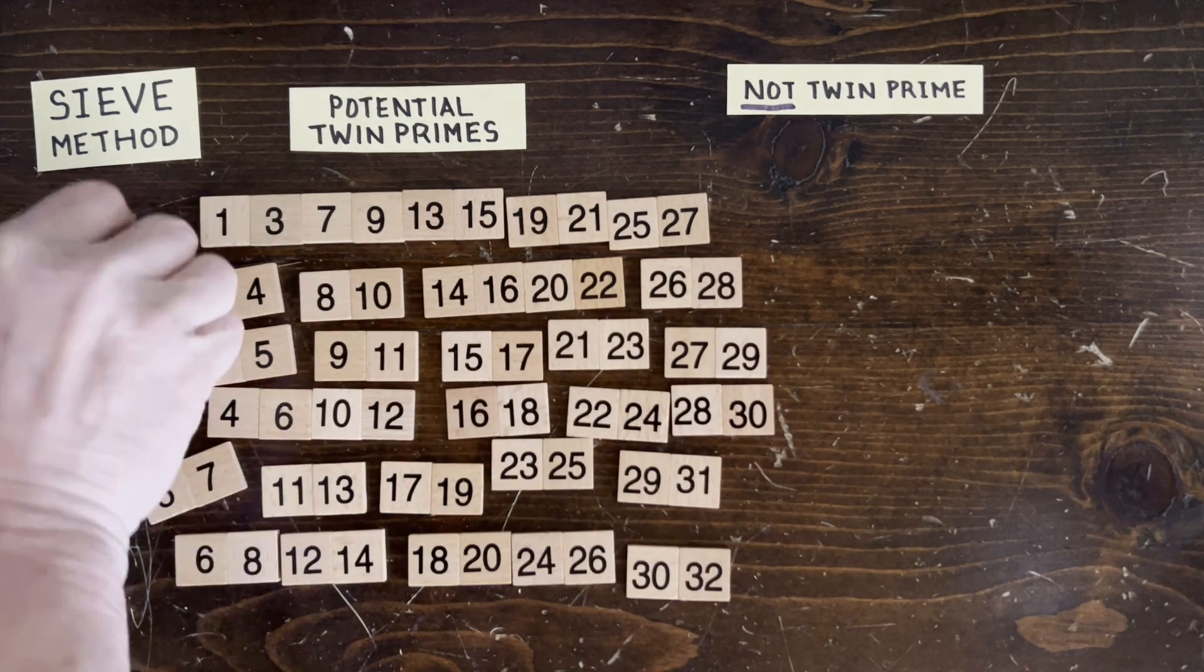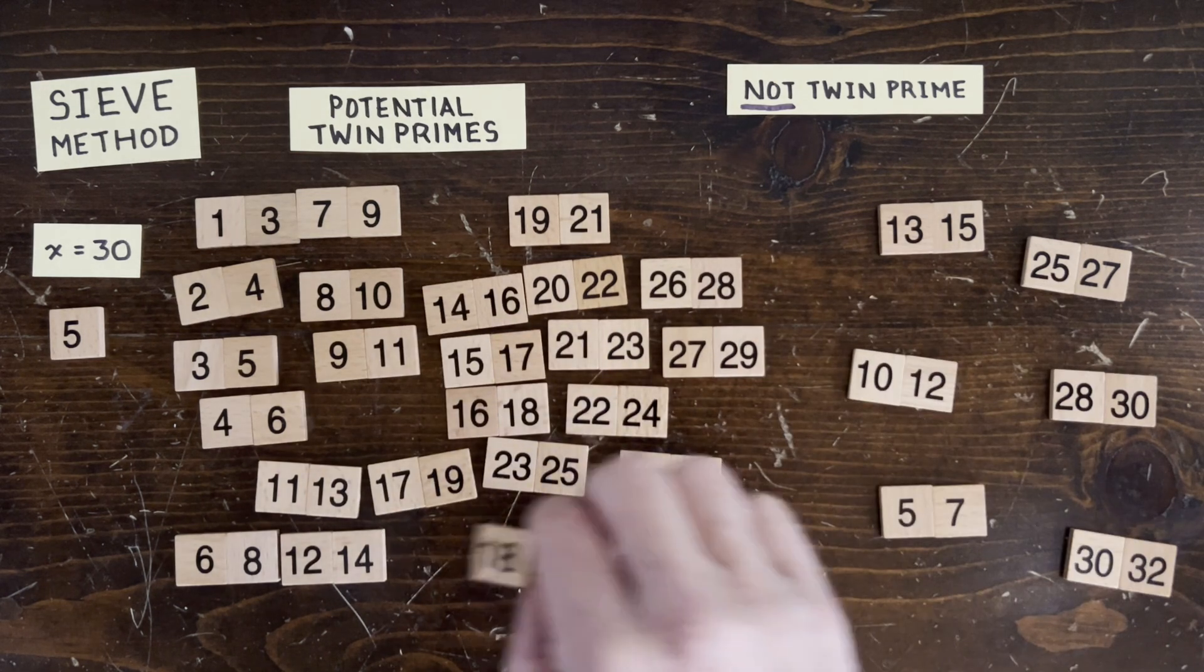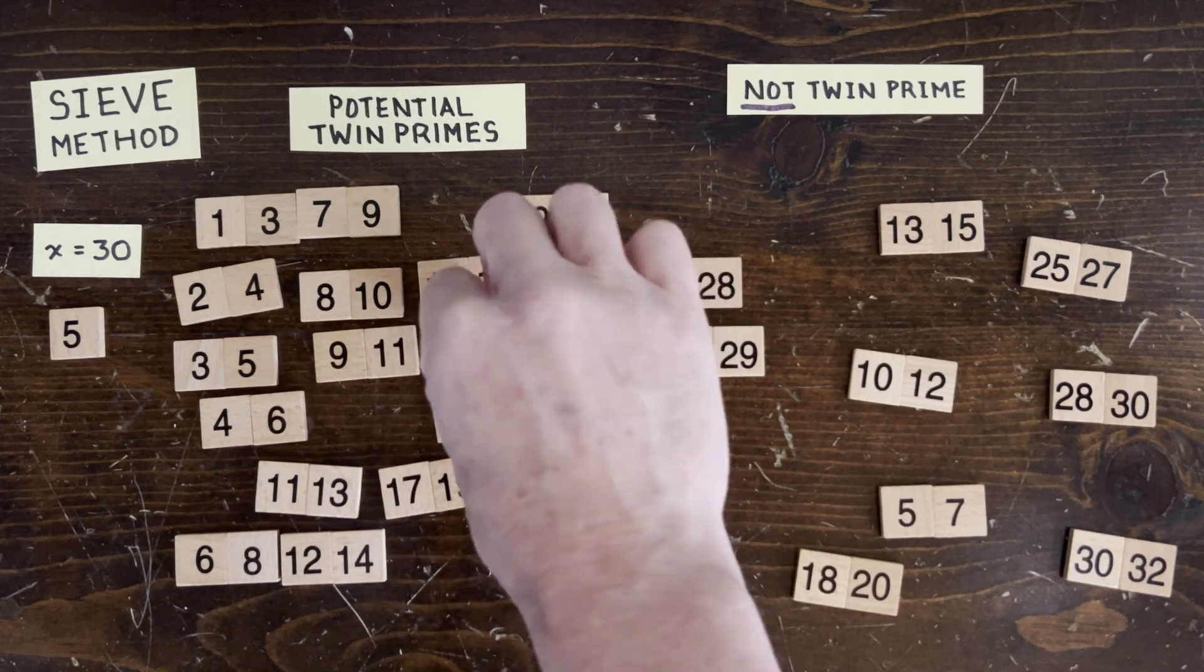Now sieving with prime 5, we get the same effect. We don't just sieve out one-fifth. We sieve out two-fifths of the candidates. Okay, let's put those back.